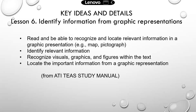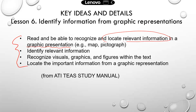Hey everyone, today we're going to practice identifying information from graphic representations. These are the learning objectives. Basically, you need to read and be able to recognize and locate relevant information in a graphic presentation. Examples are maps, pictographs, or infographics. You need to be able to locate relevant information from a whole paragraph or from a pictograph — a very important skill to do well on the TEAS reading section.